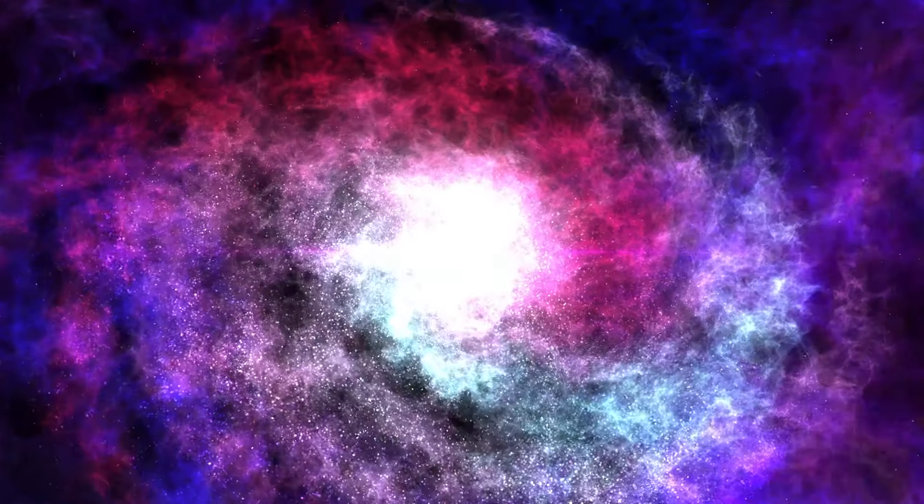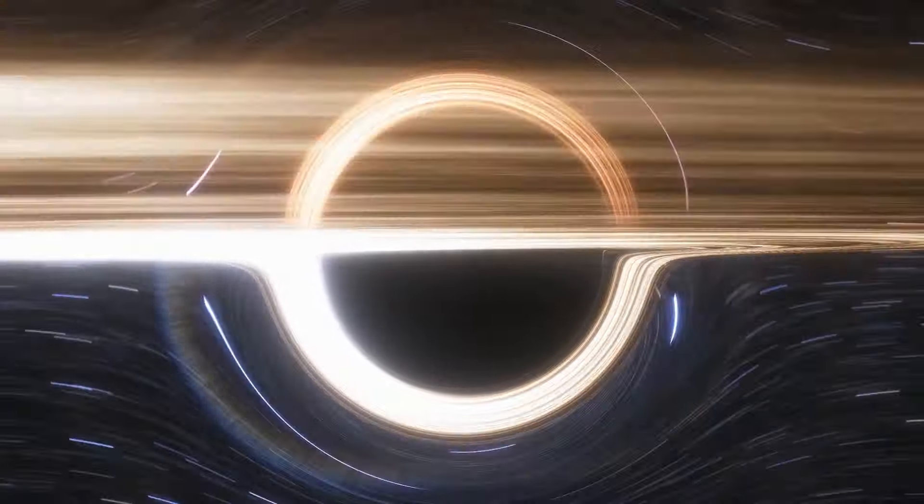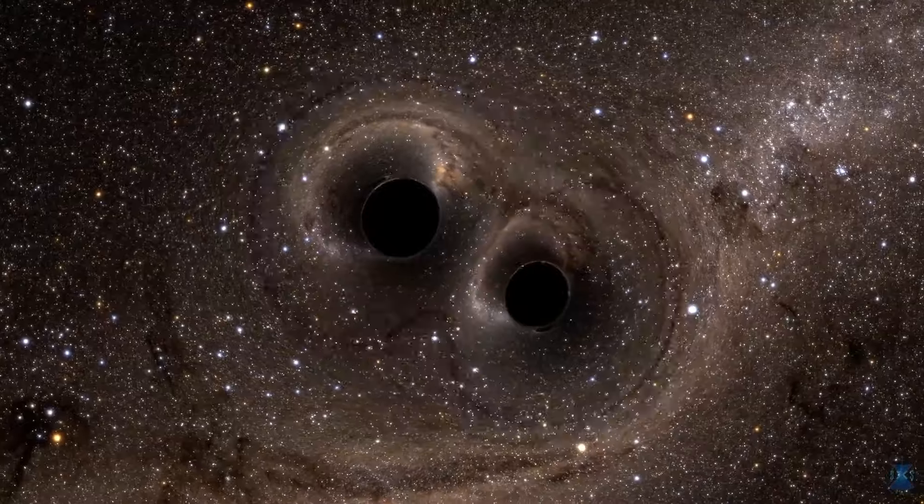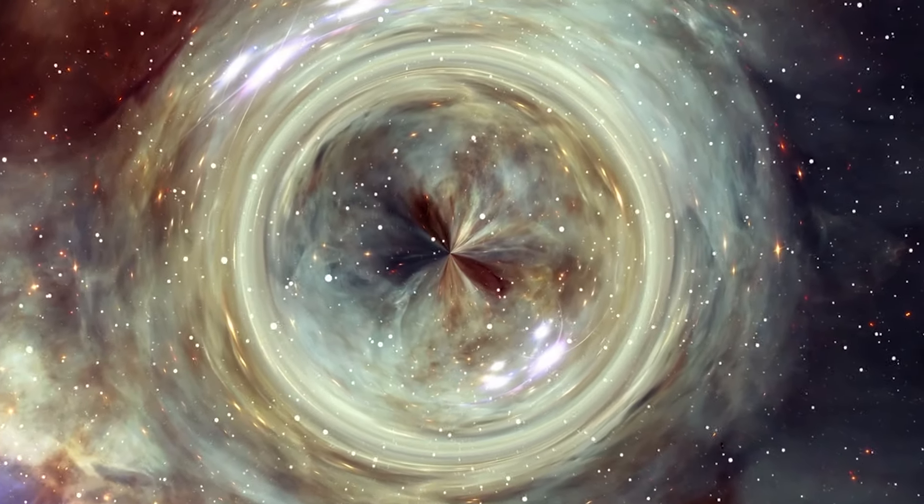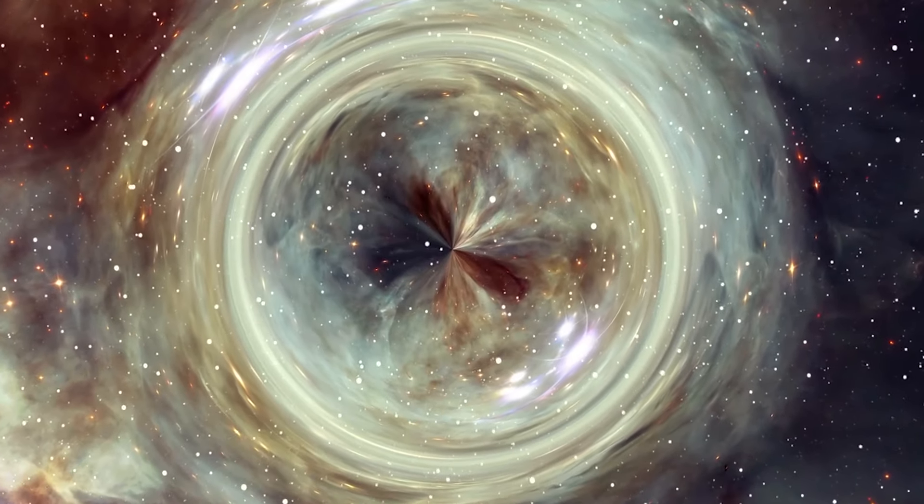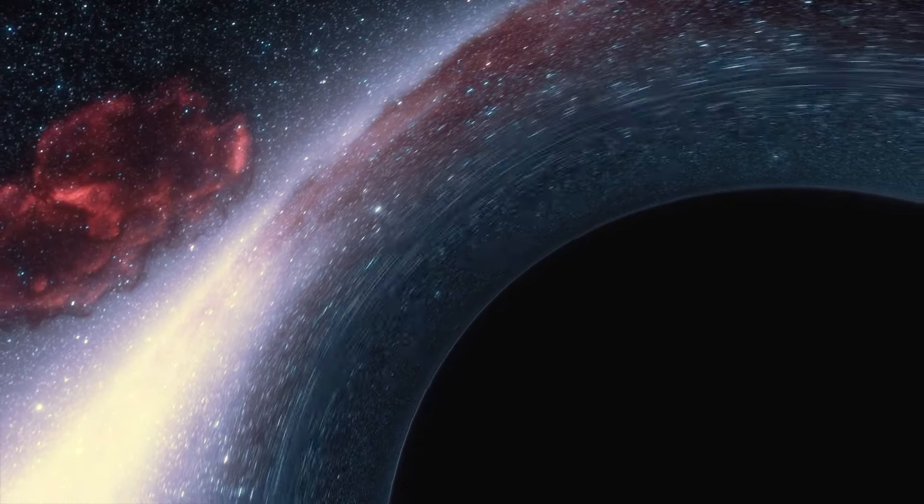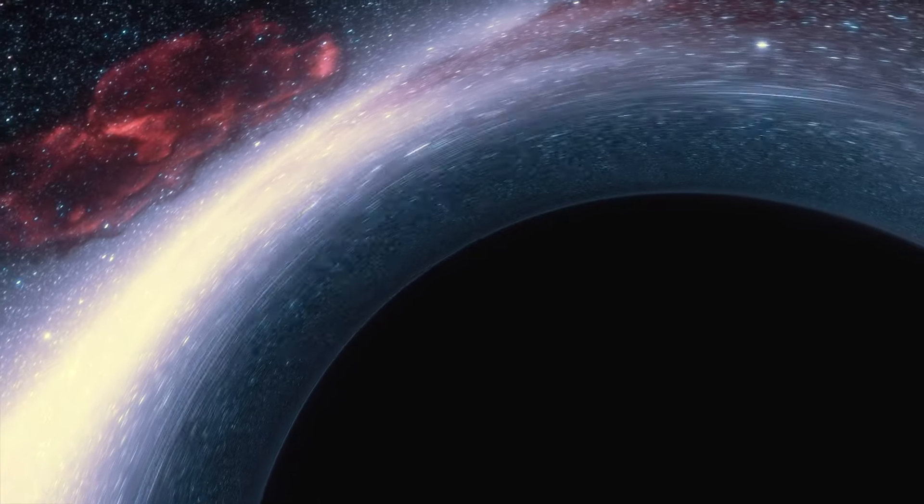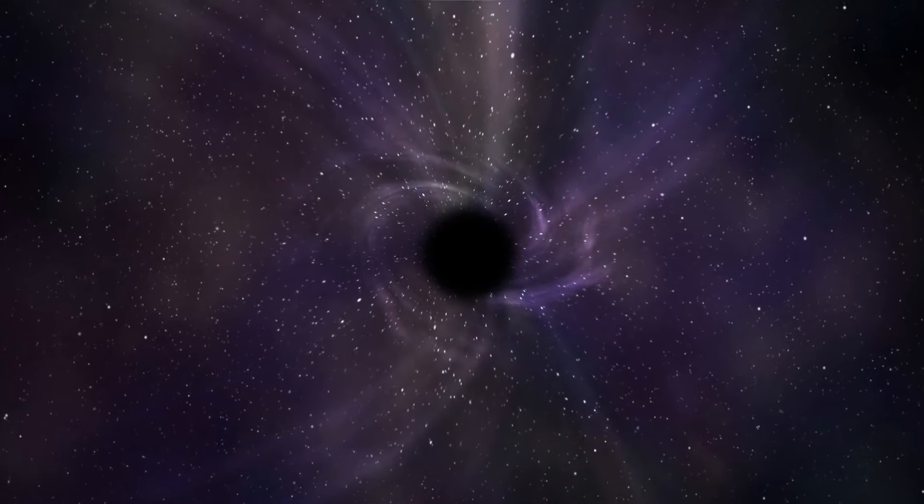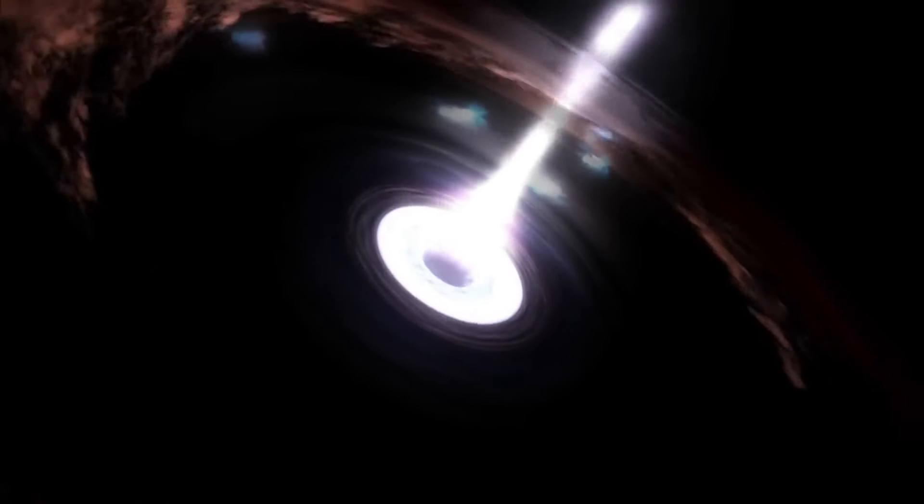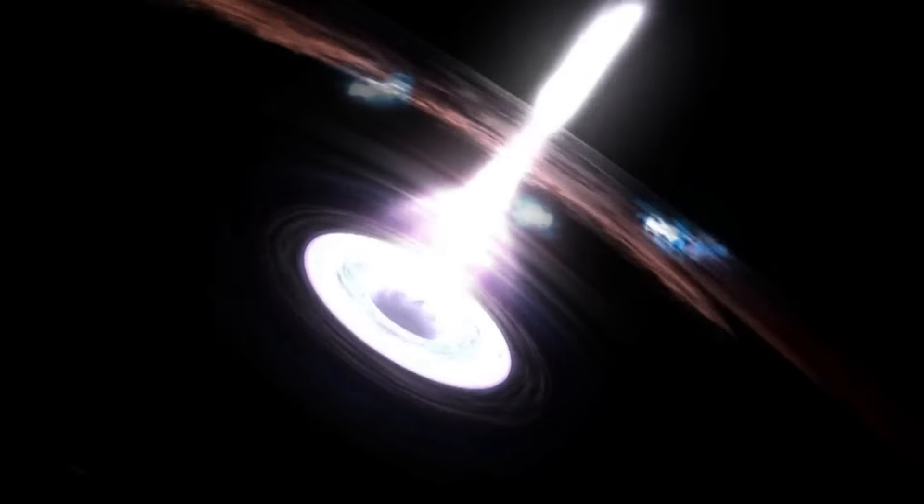There is a thought that supermassive black holes may form from the collapse of massive clouds of gas and the subsequent merging of smaller black holes. These supermassive black holes are often surrounded by accretion disks, swirling disks of gas and dust that are being drawn into the black hole's gravitational grasp. As the material in the accretion disk spirals inward, it heats up and emits intense radiation across the electromagnetic spectrum, including X-rays and radio waves.